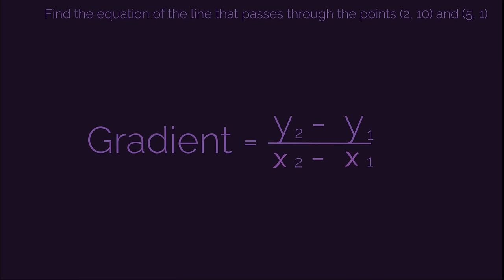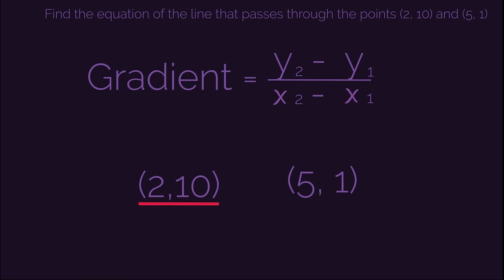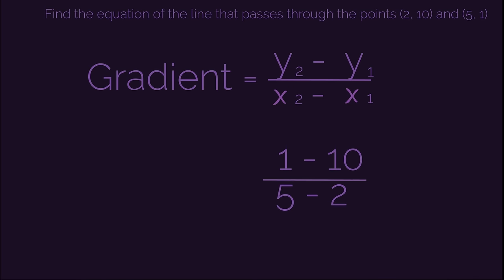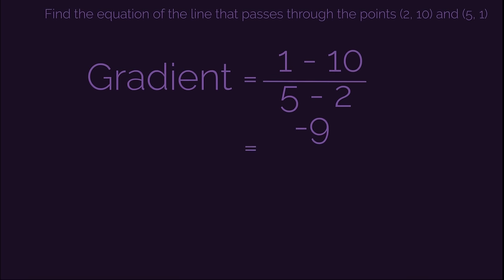So we start by finding the gradient. I'm going to use that really easy little equation with (2, 10) as my ones and (5, 1) as my twos. So we get 1 minus 10 divided by 5 minus 2, which gives us negative 9 divided by 3, so our gradient is negative 3.